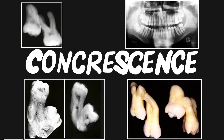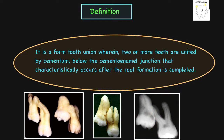Hello guys, welcome back to A to Z Dentistry. Today we will be studying about concrescence in detail. Starting with the definition: it is the form of tooth union wherein two or more teeth are united by the cementum below the CEJ, and this occurs after root formation is completed. It occurs when two teeth are united by means of their roots or at the level of the root trunk, but below the level of the cemento-enamel junction. As we can see in the pictures, two teeth appear to be united.